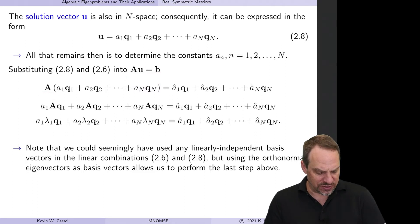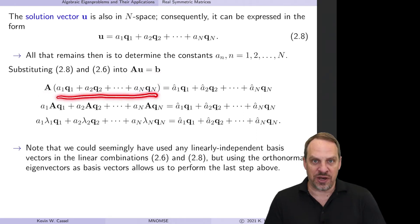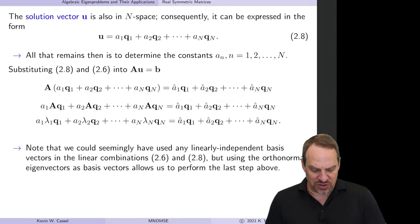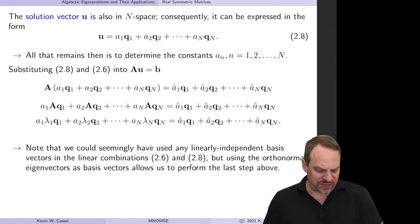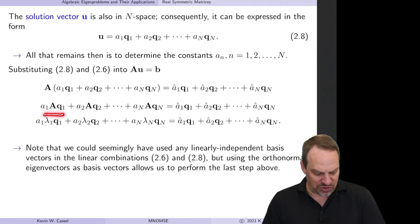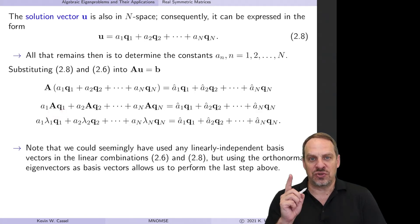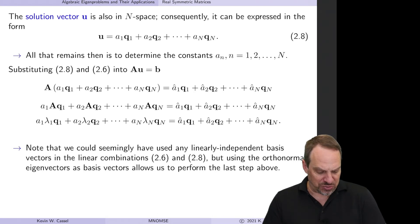So we have A times U — the linear combination — equal to B as a linear combination. Distributing matrix A on the left-hand side gives A times Q1, A times Q2, all the way through. But from the eigenrelationship, AQ1 equals Lambda1 Q1, so we can replace AQ1 with Lambda1 Q1, AQ2 with Lambda2 Q2, and so on.